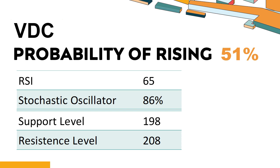The current stochastic oscillator of VDC is 86%. When the stochastic oscillator rises above the 80 level, it is usually considered overbought, indicating that the stock may be due for a price pullback.